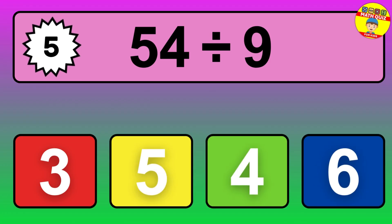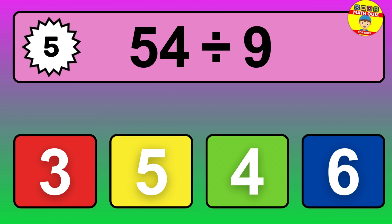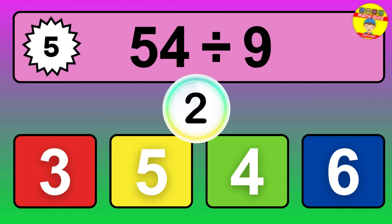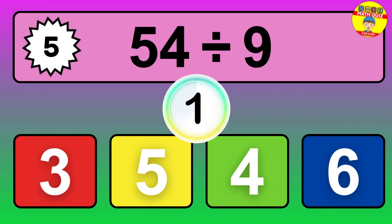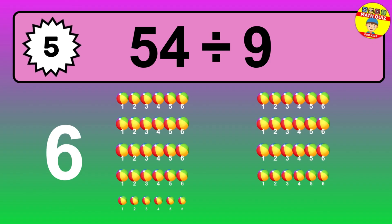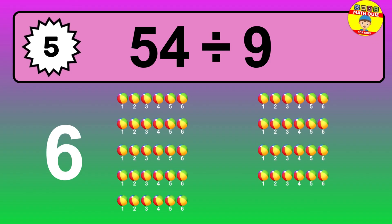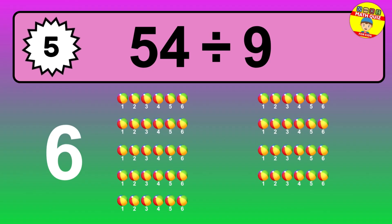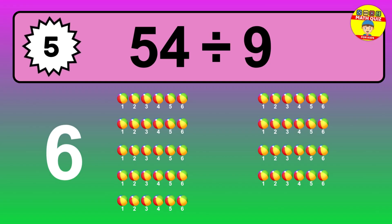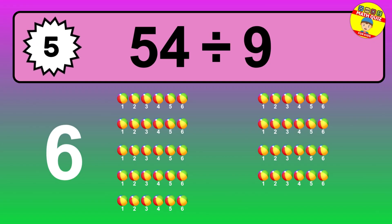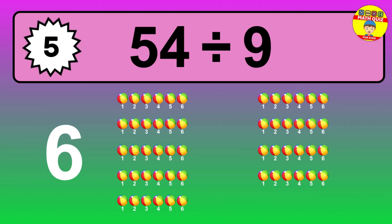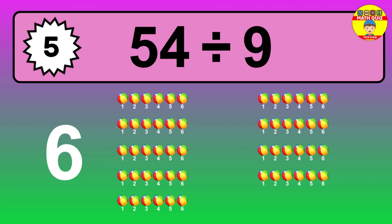54 divided by 9 — time to think. Let's go to the solution. Divide the number 54 by 9. Each group contains 9 units, so dividing 54 by 9 results in 6 equal groups. Thus, the result is 54 divided by 9 equals 6.